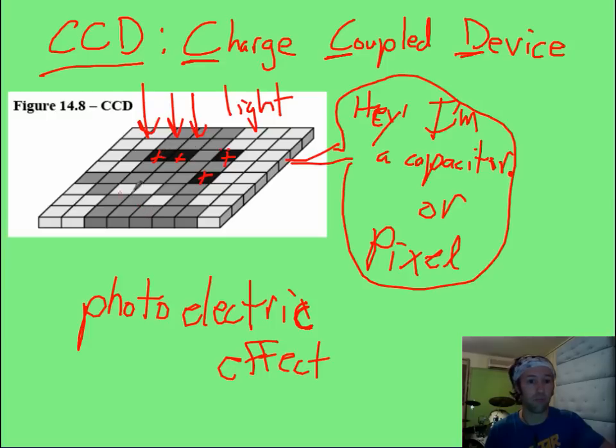And if it hits certain ones, light does, or darkness does, then it can recognize that, and it can generate a picture based on where the light is hitting.